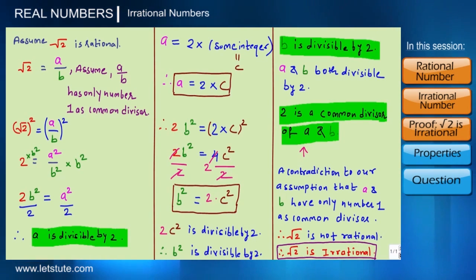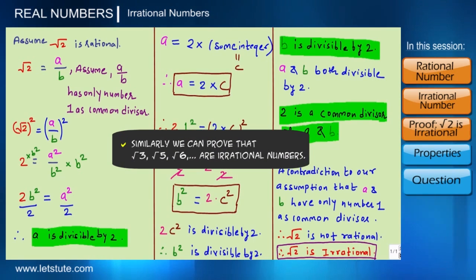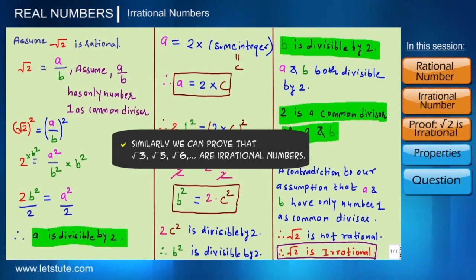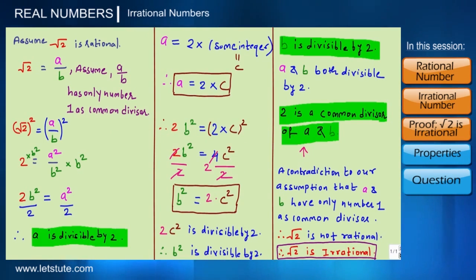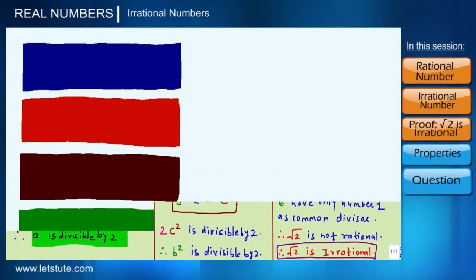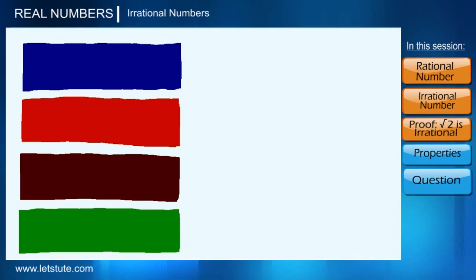So if you don't have a calculator, this proof by contradiction is the way to prove whether a given number is irrational. Similarly, you can prove that root 3, root 5, root 6, and root 7 are all irrational numbers. Now let's learn some more facts about irrational numbers.